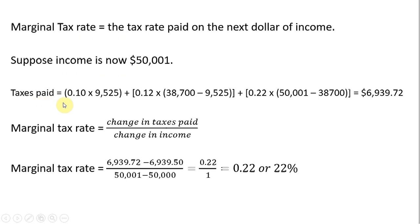Let's calculate the taxes paid — it's essentially the same calculation, the only difference is that we bring the income up to fifty thousand and one dollar. Doing the calculation, the tax bill is six thousand nine hundred and thirty-nine dollars and seventy-two cents. To find the marginal tax rate, we look at the change in taxes paid over the change in income. The change in taxes paid is twenty-two cents compared to before, and the change in income is just one dollar.